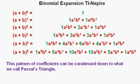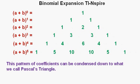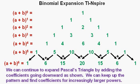This pattern of coefficients can be condensed down to what we call Pascal's triangle. Here the coefficients are highlighted in green. And here is the triangle with just the coefficients left over in Pascal's triangle. We can continue to expand Pascal's triangle by adding the coefficients going downward as shown below. We can keep up the pattern and find coefficients for increasingly larger powers.